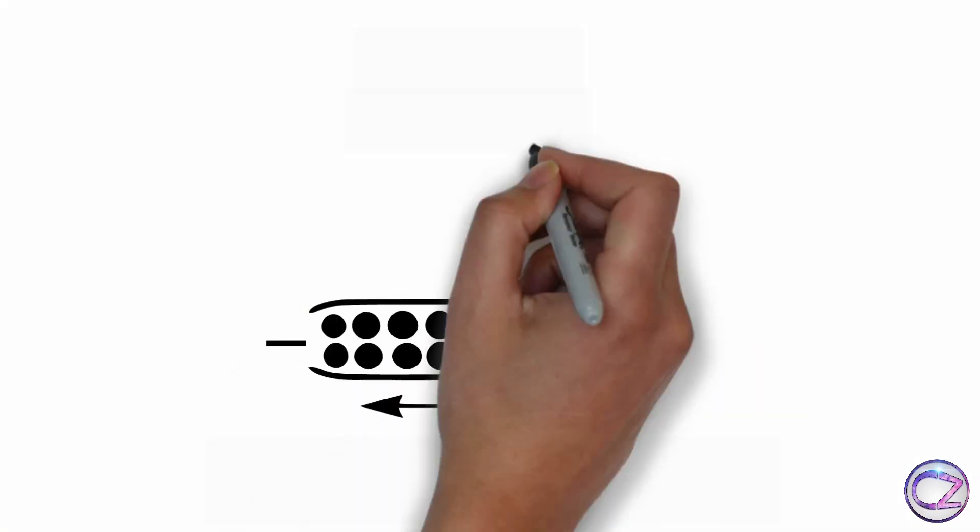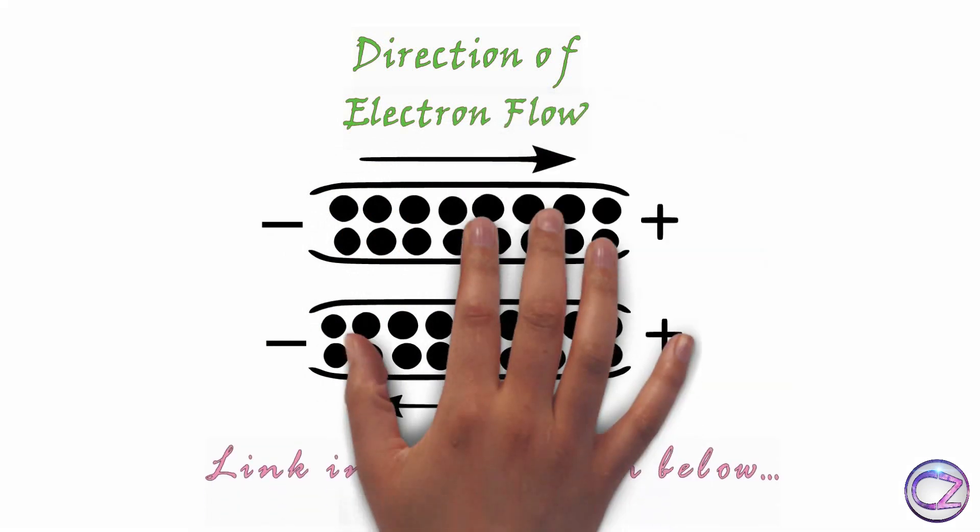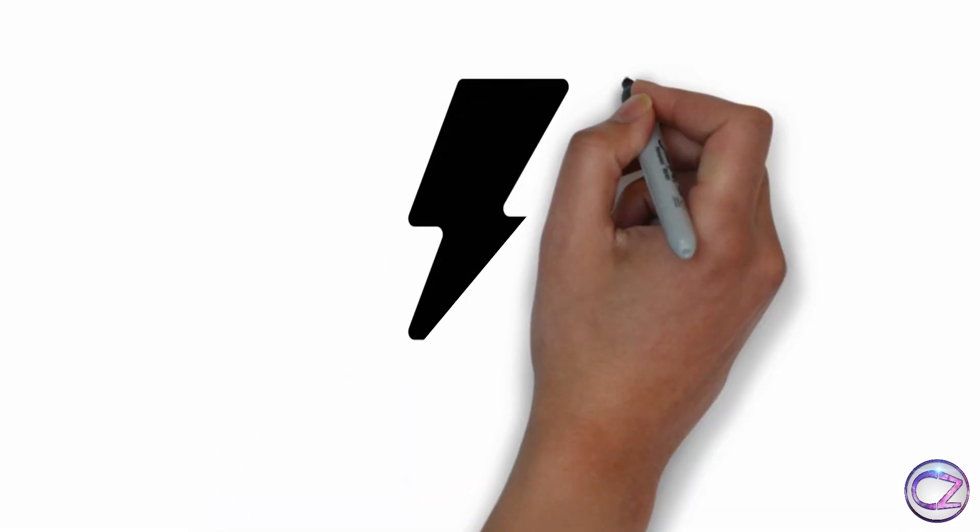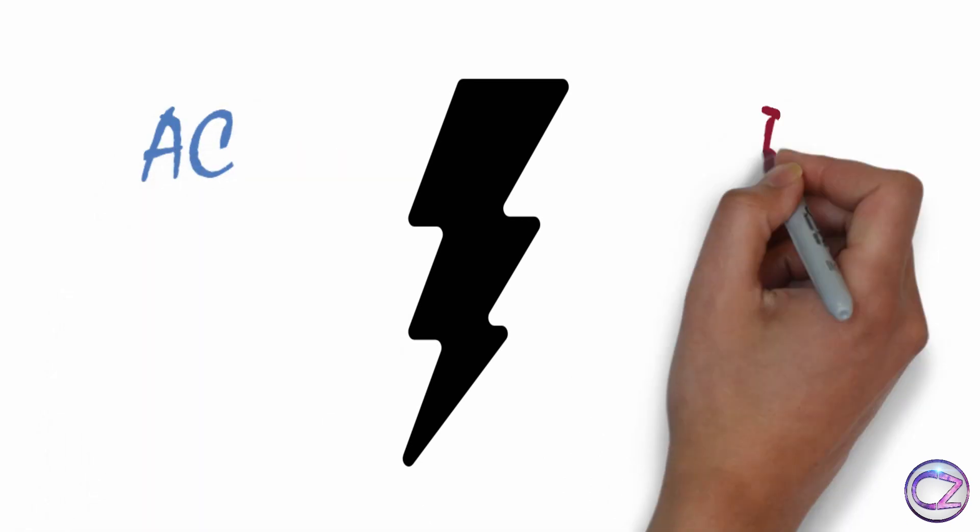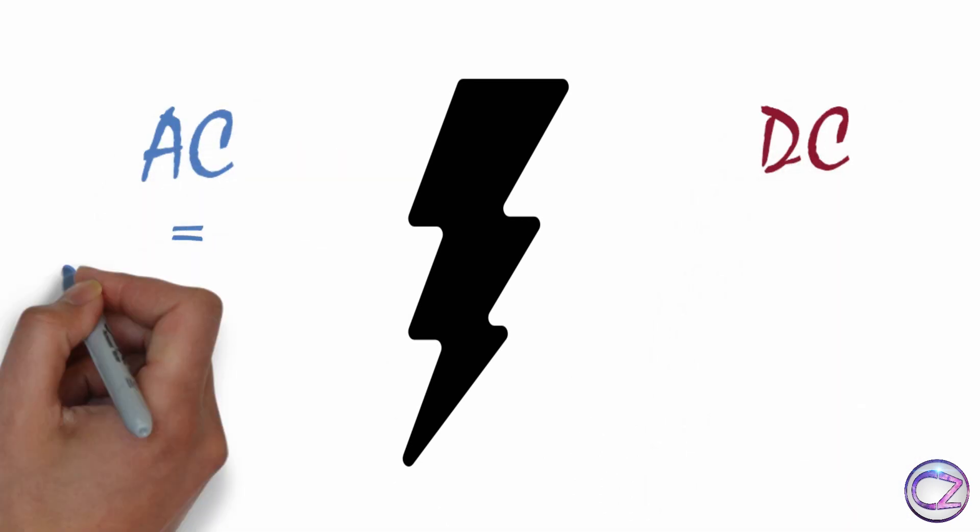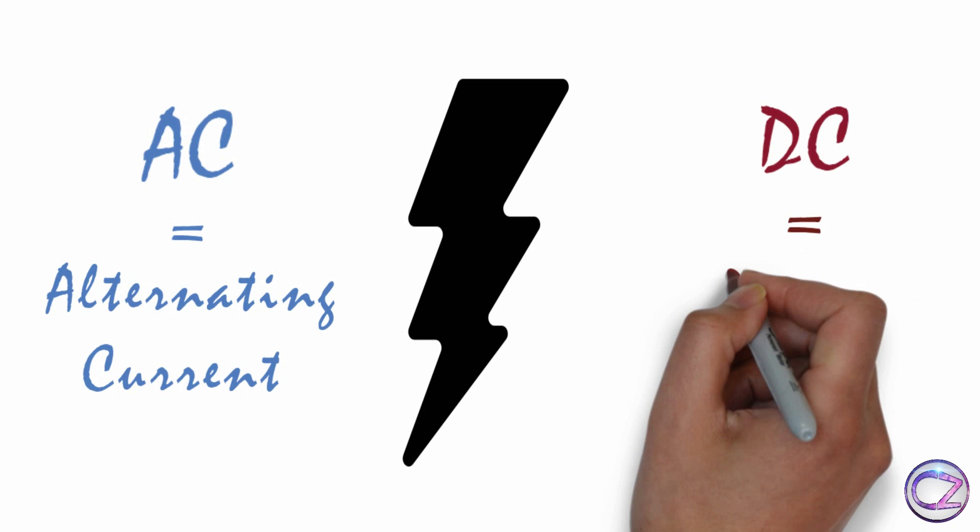In my previous video I told you reduction of electron flow. But this time I am going to explain current classifications, which are AC and DC. AC stands for alternating current and DC stands for direct current.